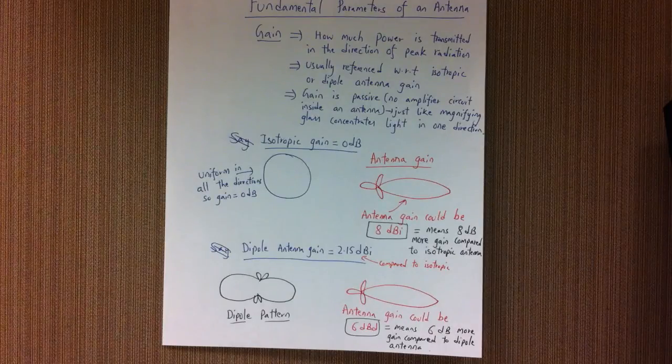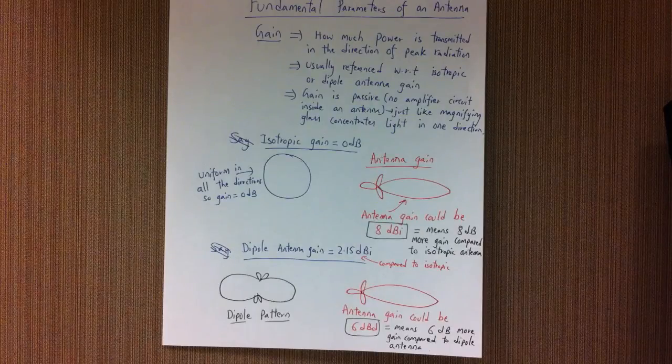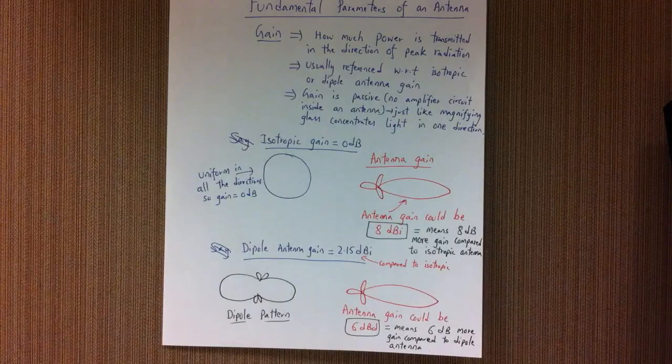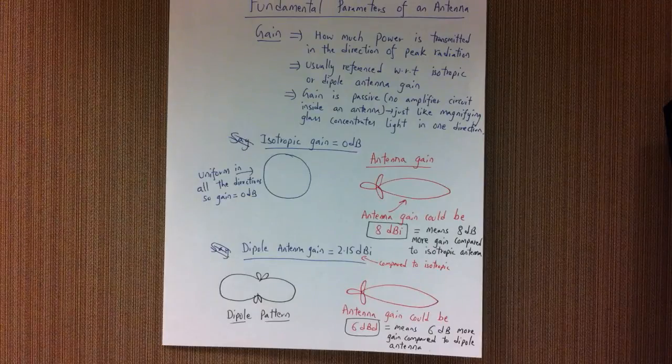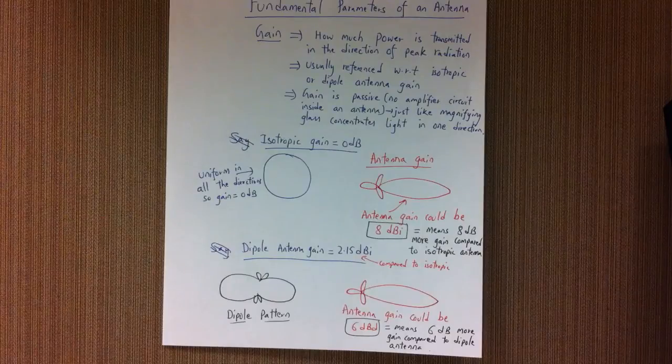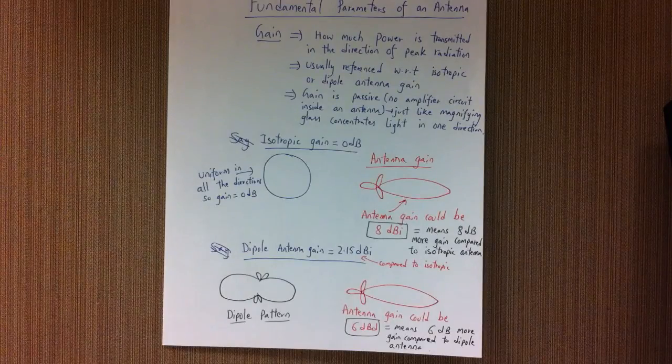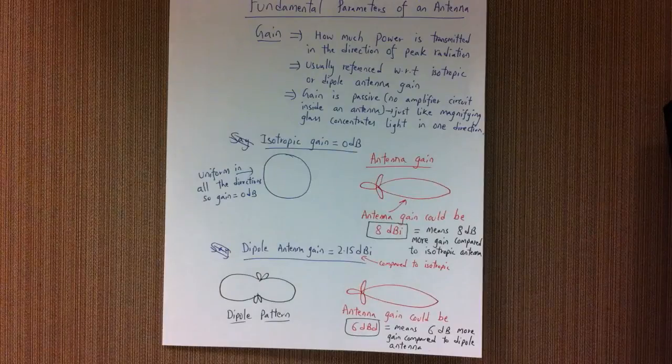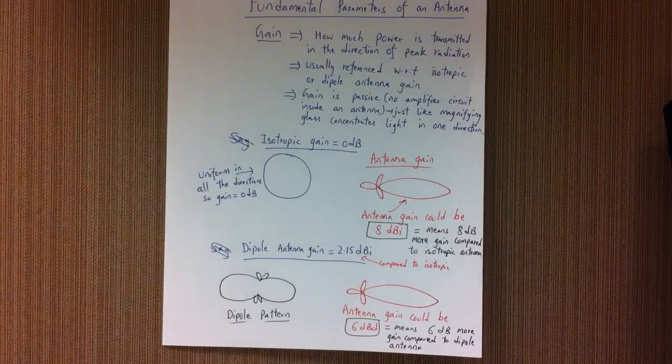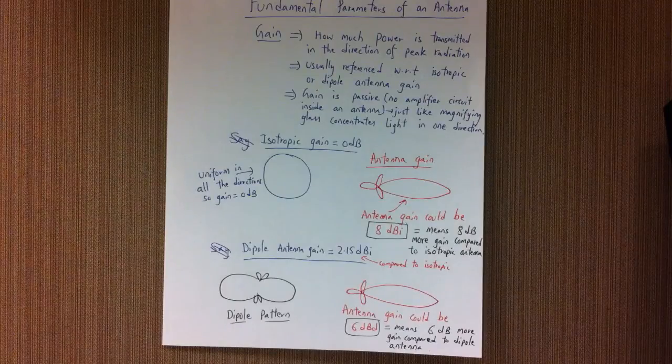With respect to dipole antenna, it could be 6 dBd, which means that the dipole gain is 2.15 dBi—2.15 dB more than isotropic gain. The gain of the antenna with respect to the dipole antenna is 6 dB, so it is a little bit less compared to isotropic antenna.